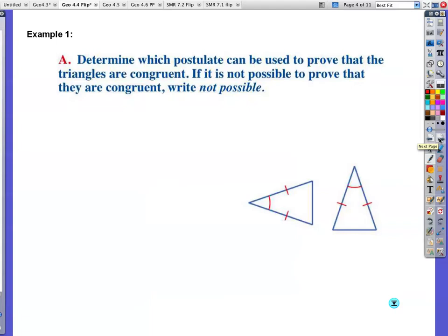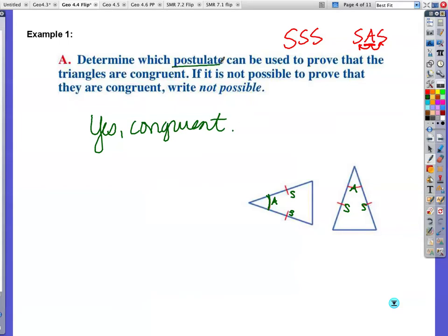Alright, example one. Determine which postulate can be used to prove that the triangles are congruent. I'm just going to write it here at the top. Our two choices are side, side, side. Side, angle, side. Please note the angle has to be between the sides. If it is not possible to prove that they are congruent, then we're going to write not possible. So I look down here. I see that I have an angle and I have a side, angle, and then I have a side. So if I work my way around, I see I have side, angle, side. Well, does that match up with this other one? We have a side, we have the angle that's congruent to this angle, and this side is congruent to this side here. So they are congruent. So I'm going to say yes, they're congruent.